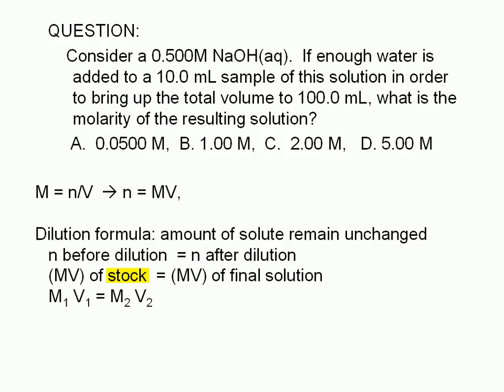The original solution is called a stock solution. It is common practice in the laboratory to keep concentrated solutions in stock and just dilute a sample of the stock to get less concentrated solutions. If we use the stock as solution 1 and the final solution as solution 2, we can say that during a dilution, M1 times V1 equals M2 times V2.